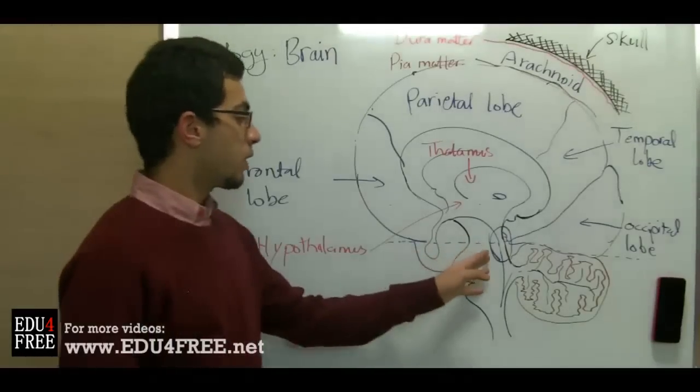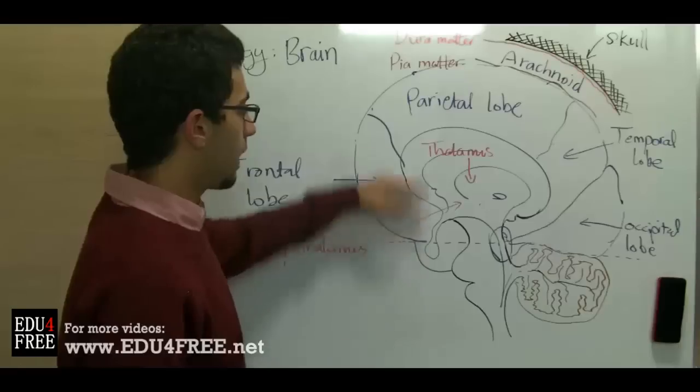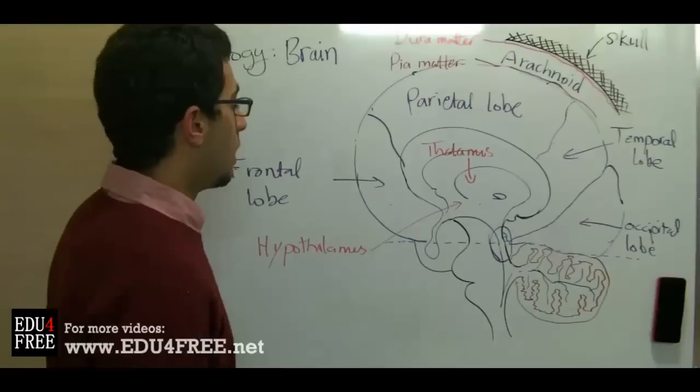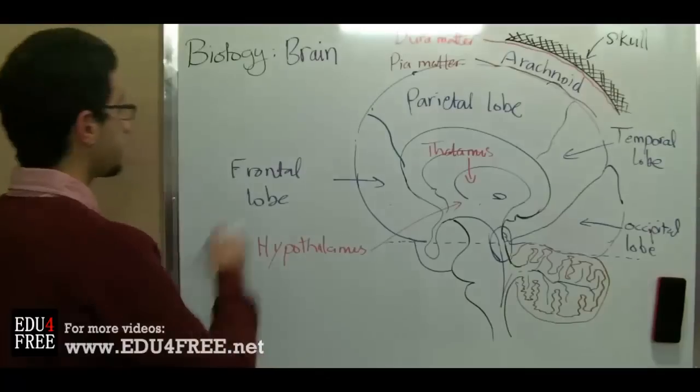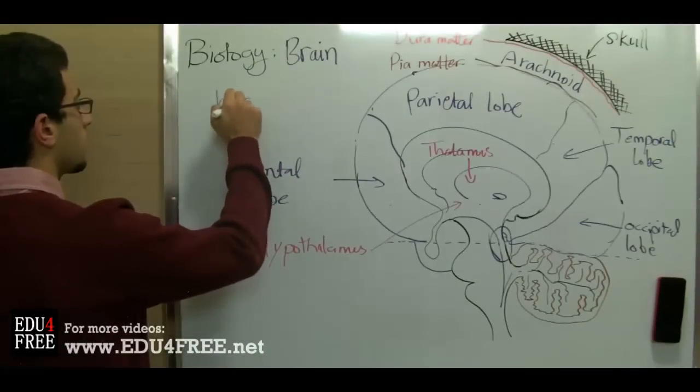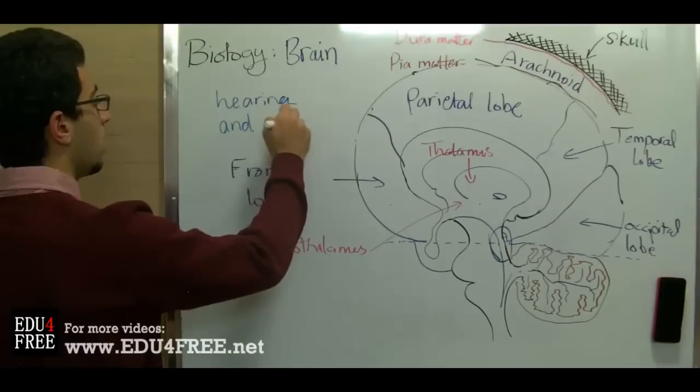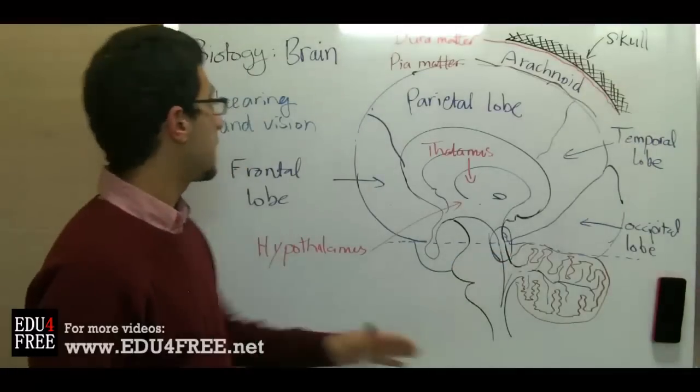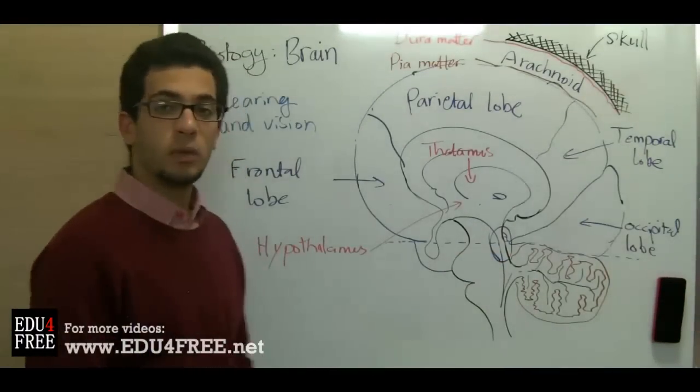The midbrain is the point of connection between the forebrain, the upper part, and the hindbrain, the lower part of the brain. The midbrain contains centers of hearing and vision. It also controls lots of reflexes, such as those relating to hearing, and it controls the body equilibrium.